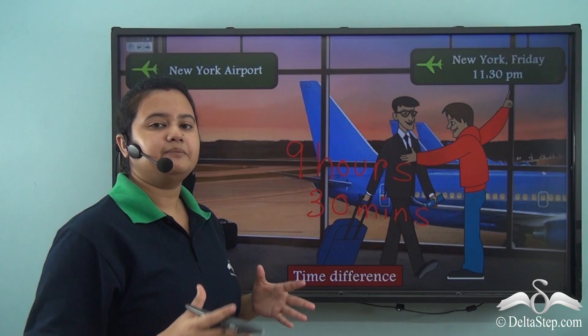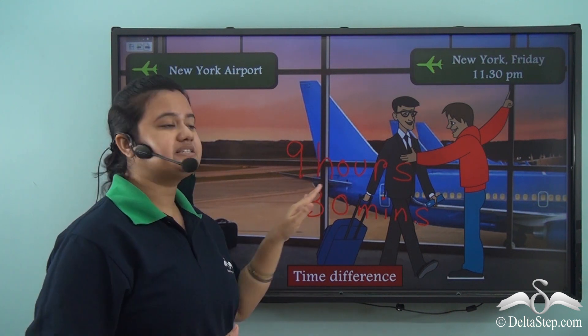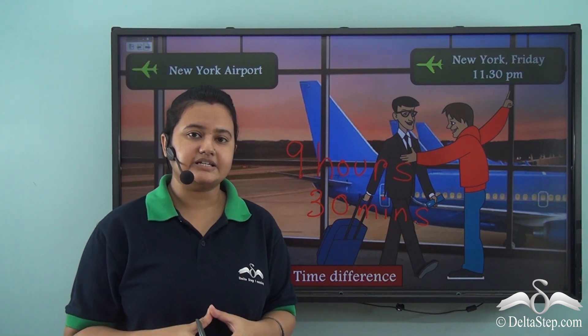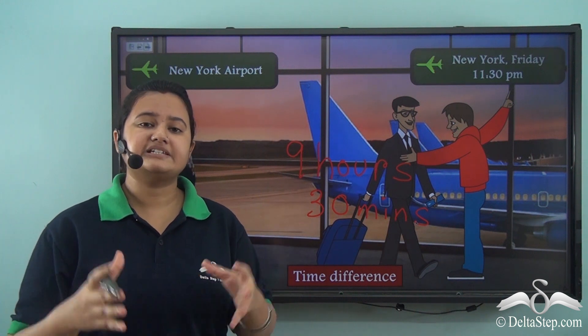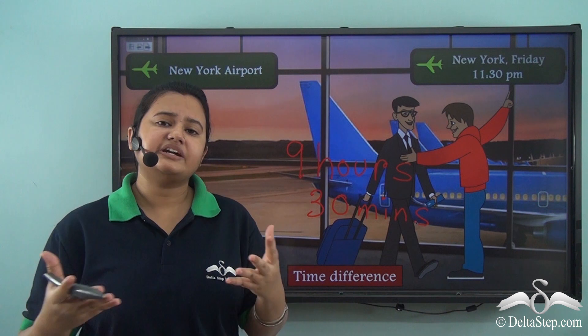The time difference between USA and India is 9 hours and 30 minutes. Not only USA and India, but other countries of the world follow different timing patterns. What determines these different time patterns?